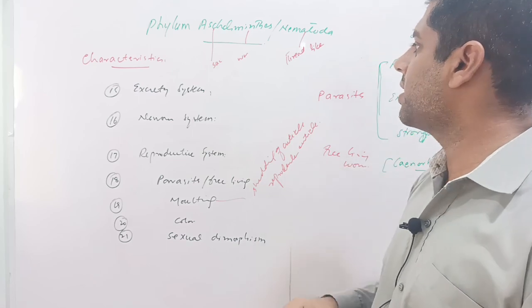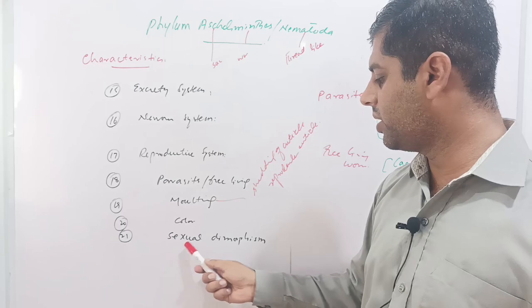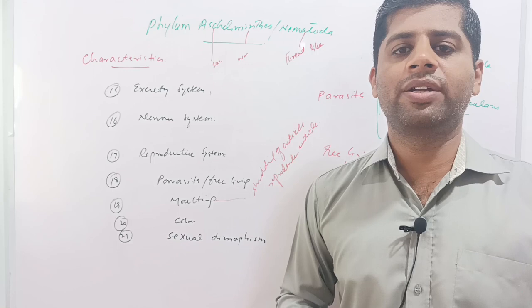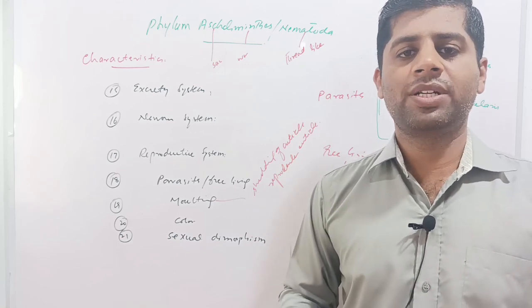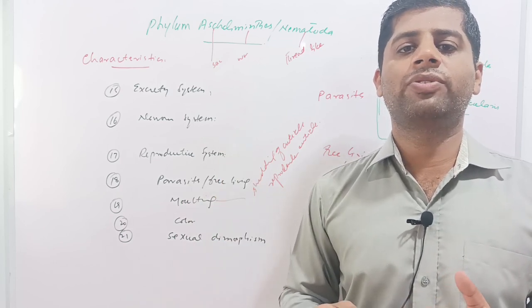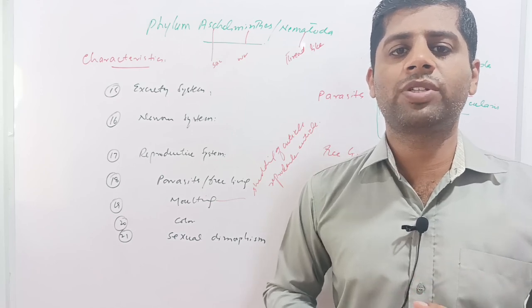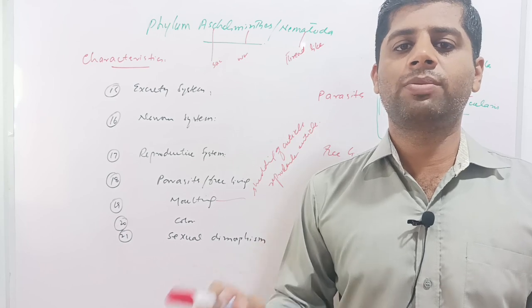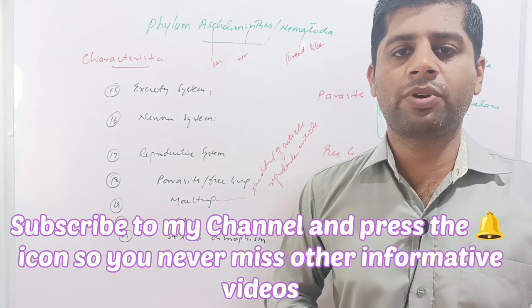Most nematodes are white or creamy colored, but Ascaris has a red tinge while all other worms are white creamy colored. Sexual dimorphism means that male and female can be identified by appearance — for example, in Ascaris the male has a hook-like tail while the female has a sharp and linear tail, not hook-like. On the basis of these morphological features you can differentiate between male and female.